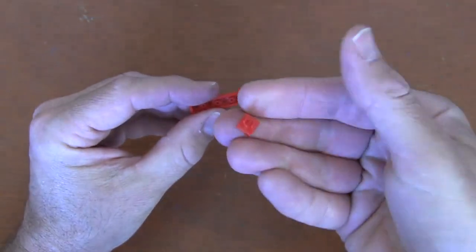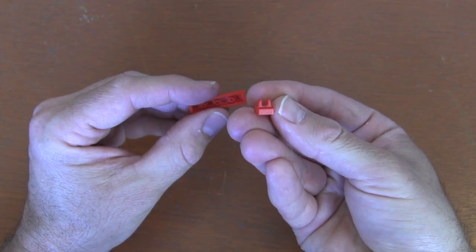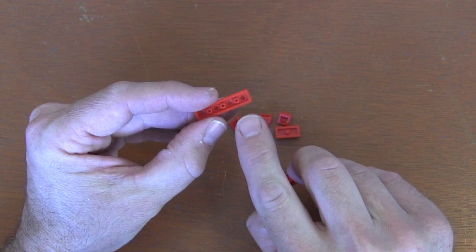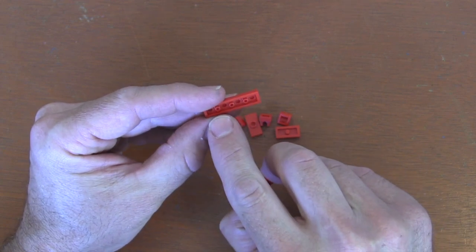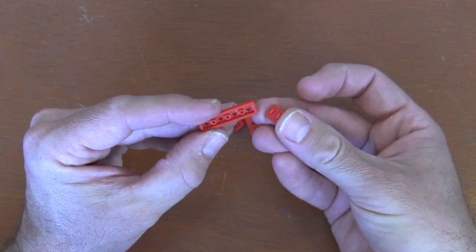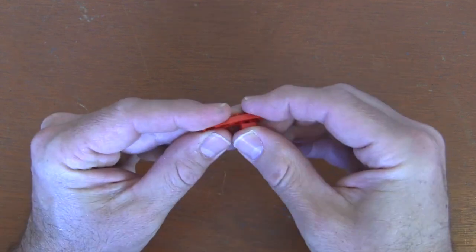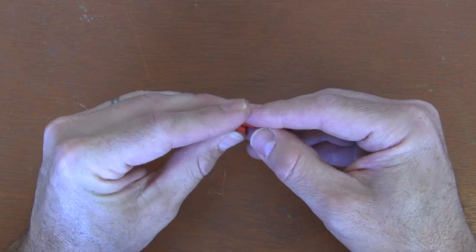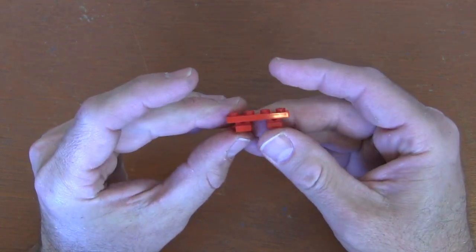What we're going to do is get two of these 1x1 tiles with clip on top and put them so that the clip grabs onto the anti-stud on our right and our left. We're doing those two outside anti-studs. We're just getting that tile clip to grab onto that anti-stud like this. We've got two of them grabbing on. We've kind of got the base of our Golden Gate Bridge.